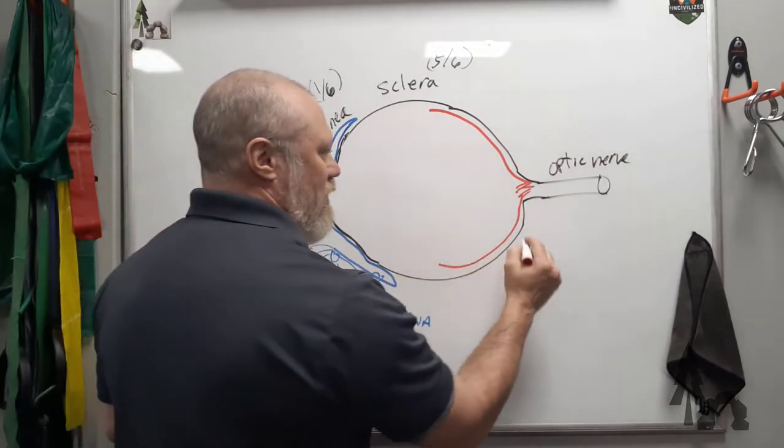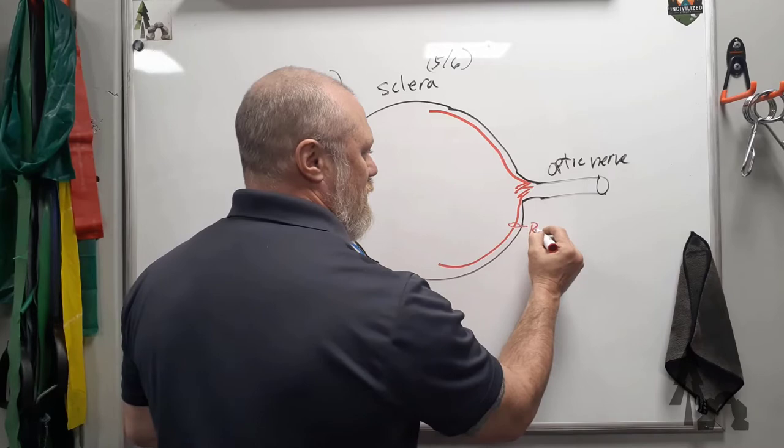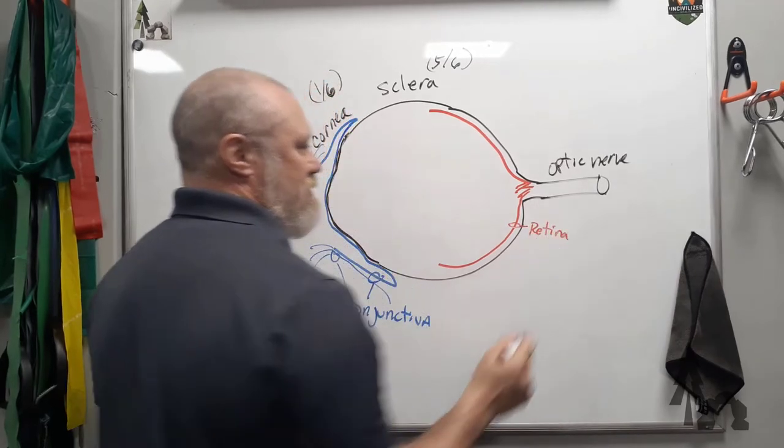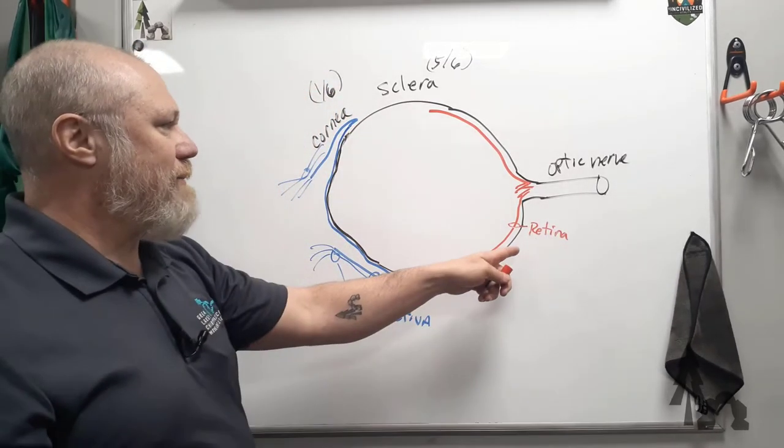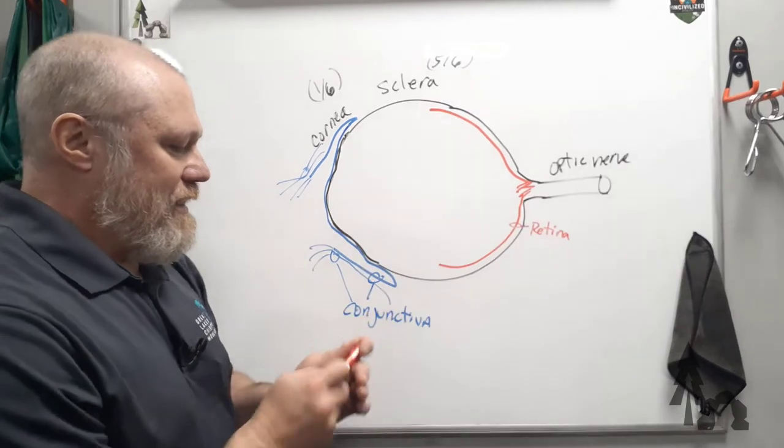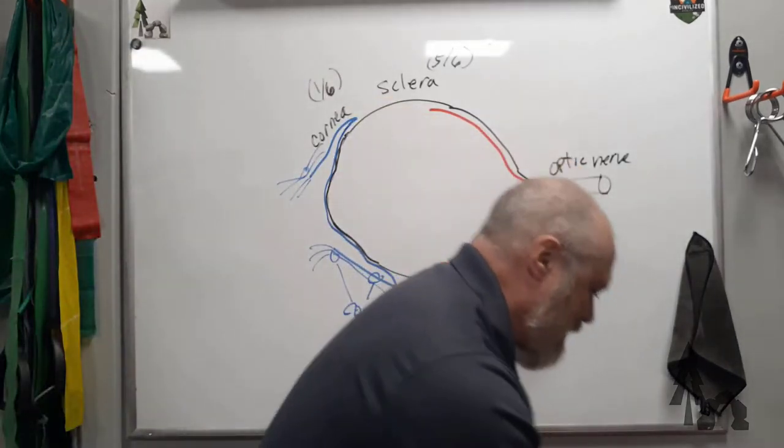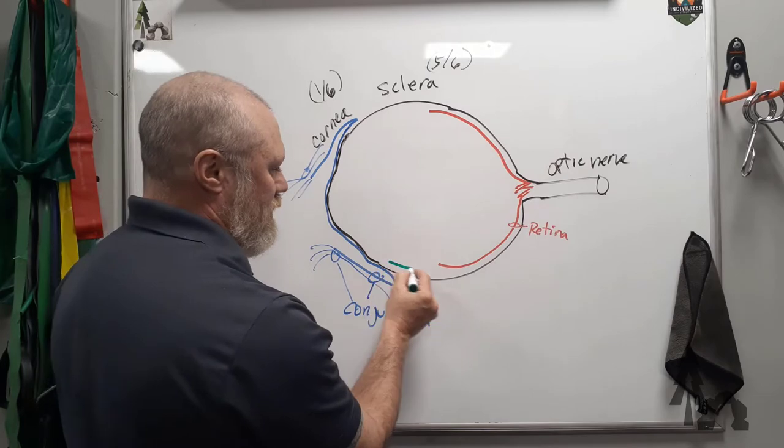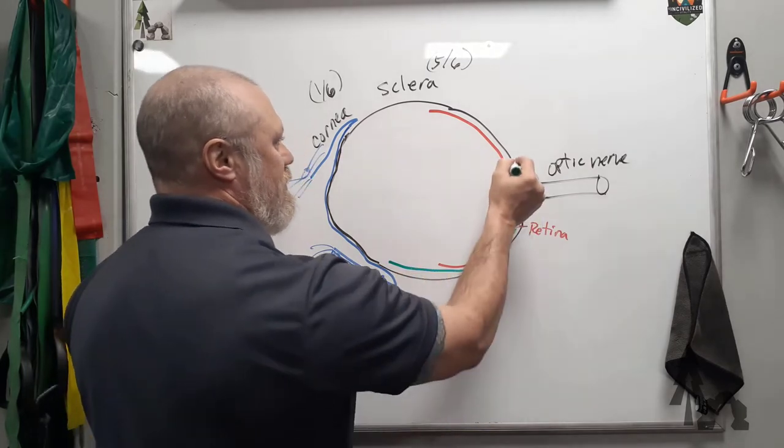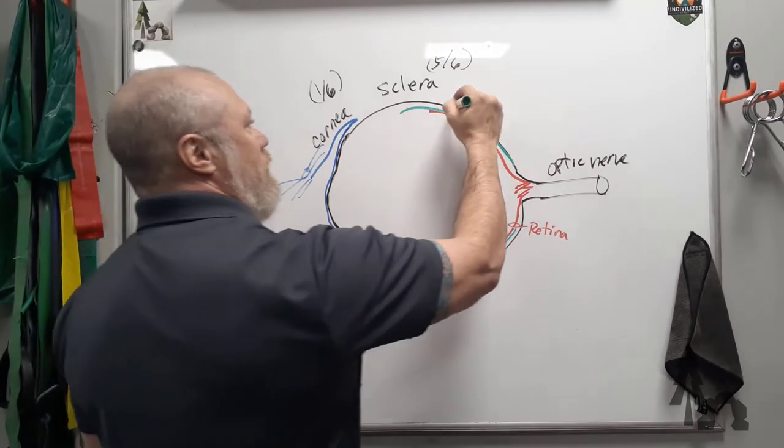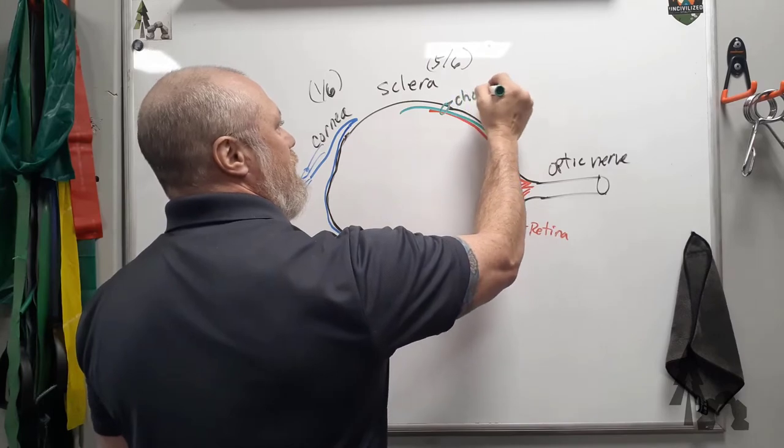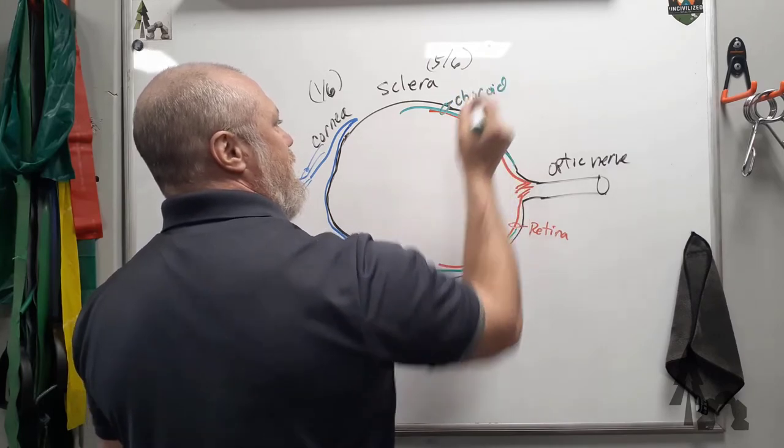You've got your retina at the back. And we'll talk about the retina and its parts in just a moment. And then between the sclera and the retina, which runs up a little bit forward, you're going to have another layer that's called the choroid. The choroid layer.